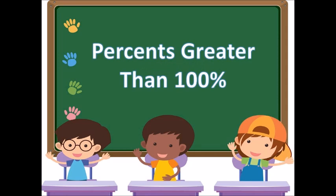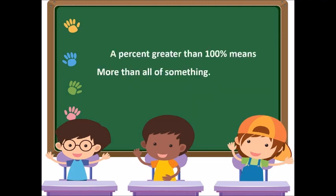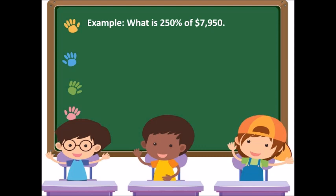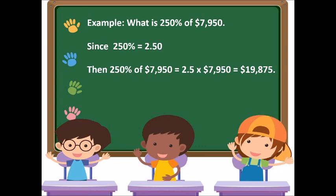Percent greater than 100 means more than all of something. For example, what is 250% of $7,950? Since 250% equals 2.50 in decimal form, we simply multiply. 250% of $7,950 equals $19,875.